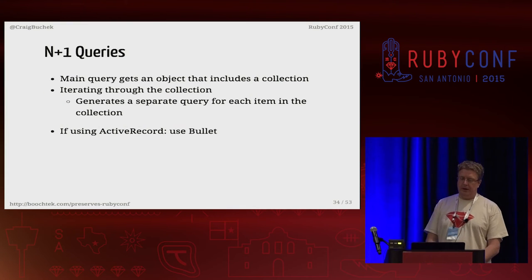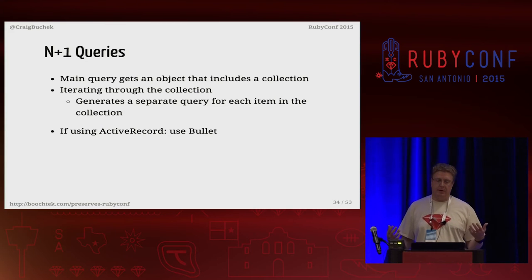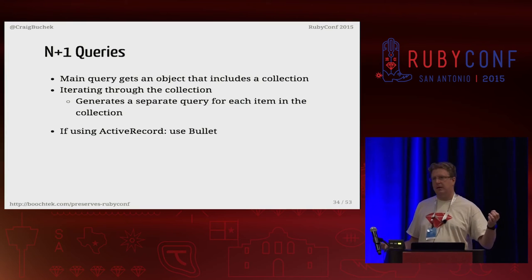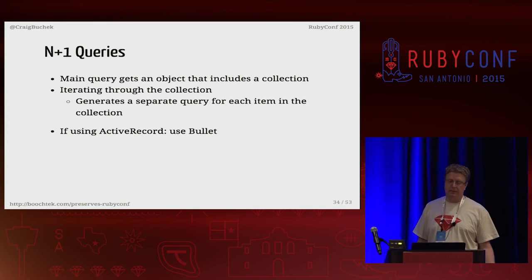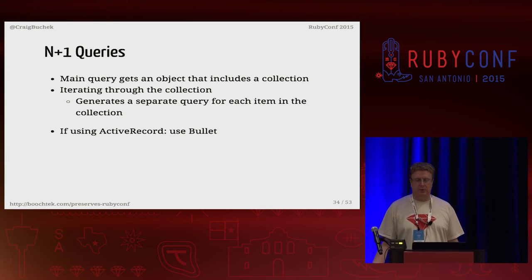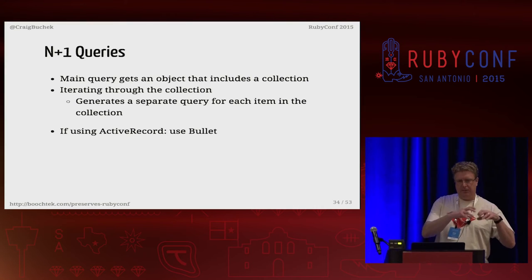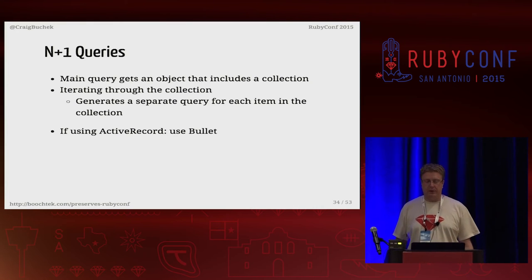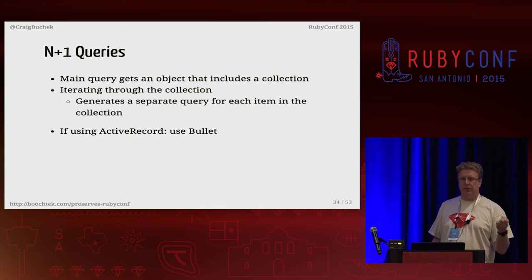N+1 queries are an anti-pattern. SQL queries involve network latency so they're really slow. If you've got a post with a thousand comments and you do a query to get the post and then iterate through comment IDs, you'd end up with a thousand and one database queries — very slow. Sometimes ActiveRecord gives you those, usually because you're manually iterating through a collection. The solution in ActiveRecord is usually to use 'include' to eagerly load associated objects. If you are using ActiveRecord, please use Bullet — in development mode it will find pretty much all of your N+1 queries.